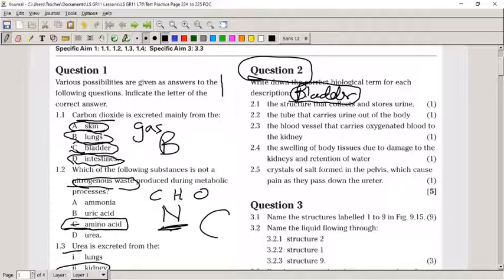2.2: The tube that carries urine out of the body. This is typically one that you need to be really careful of because there's two words that sound very much the same. There's the ureter, and the ureter carries the urine from the kidneys to the bladder. And then there's the urethra. In this case, what we have here is the urethra.